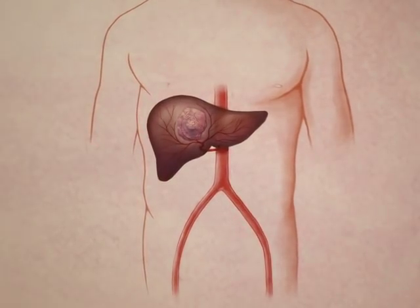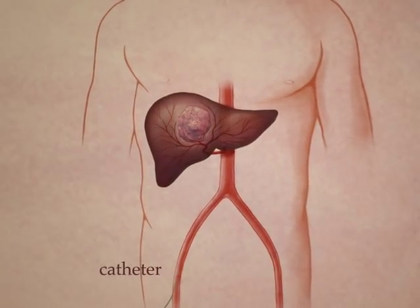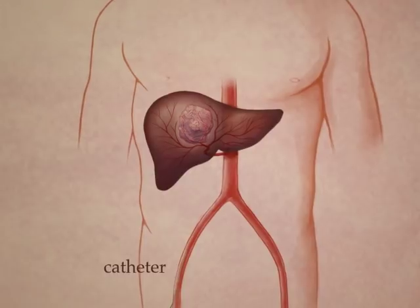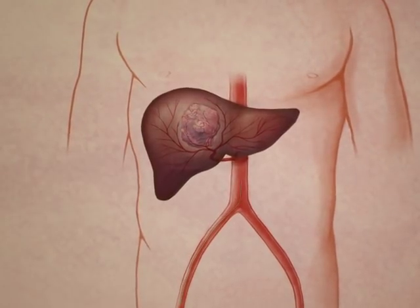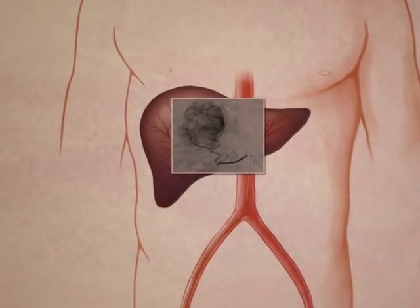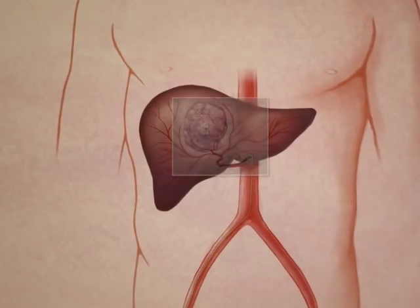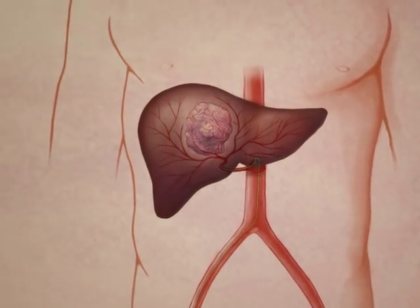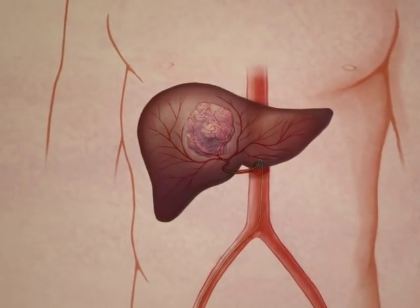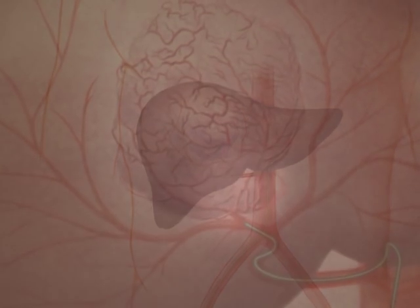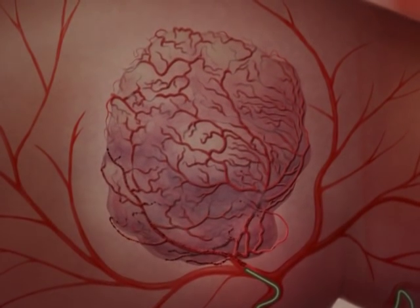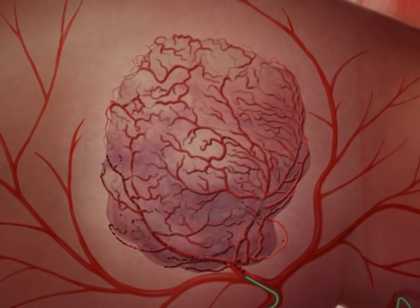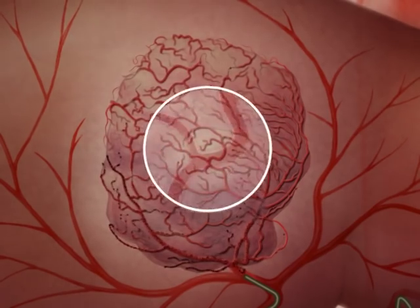During the procedure, the doctor inserts a thin catheter into a vessel in the groin. Using x-ray imaging as a guide, the doctor moves the catheter to the specific vessel that supplies the tumor with blood. A mixture of chemotherapy and embolic particles, in the form of tiny beads, are injected through the catheter.